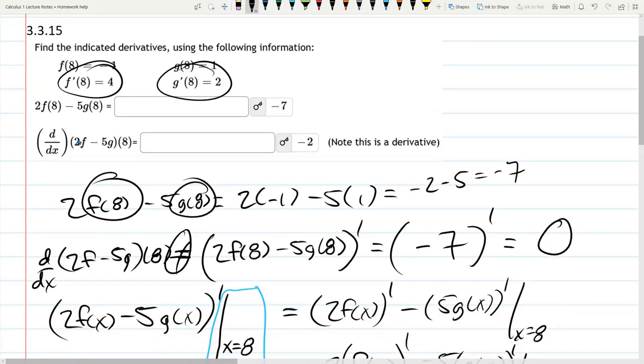So all you're doing is applying the derivative to subtraction and then the constant multiples. Can you do this in one step? Absolutely. You can do this in one step if you feel comfortable doing it.